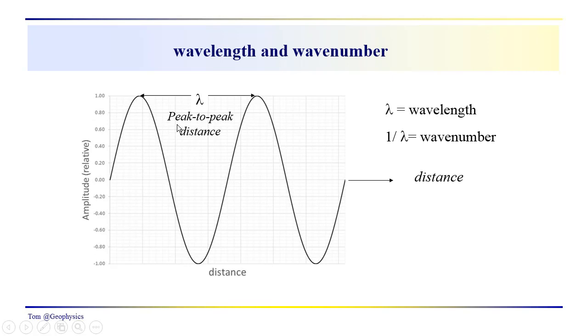Here we're just looking at the sine wave travel through space. So we have distance on this axis, and this would be the peak to peak distance, the wavelength. We have λ equal to wavelength, the typical symbolic notation for wavelength, and then 1/λ is equal to wave number.